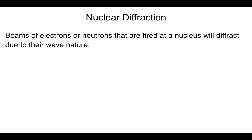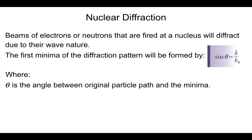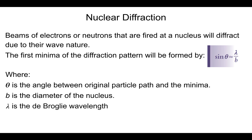As discussed in topic 12.1, objects with mass have wave behavior as well. What that means is that if we shoot electrons at a nucleus, they will diffract, just like you would see diffraction around any other object. We can find the first minima of the diffraction pattern by taking the angle to the minima and approximating the sine of that angle to the wavelength divided by b, where b is the diameter of the nucleus and lambda is our de Broglie wavelength.